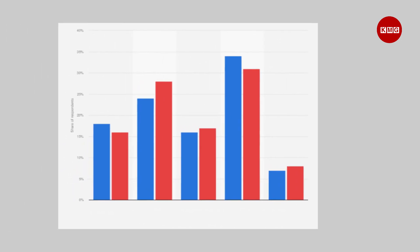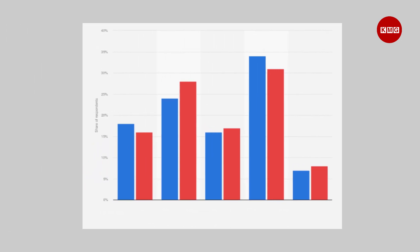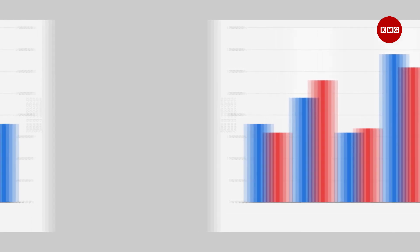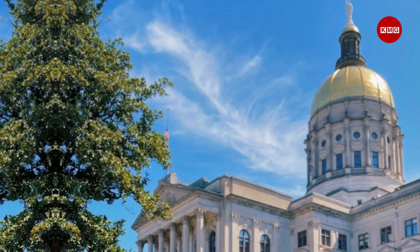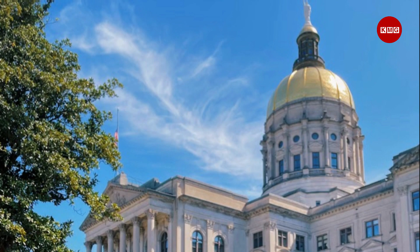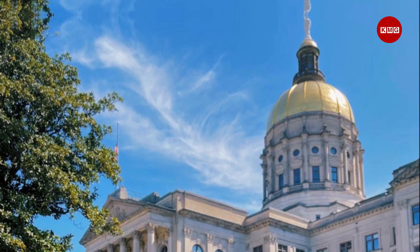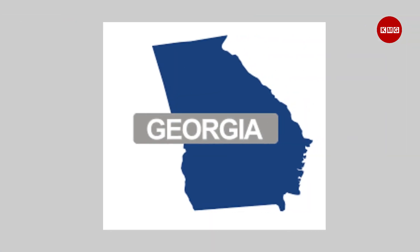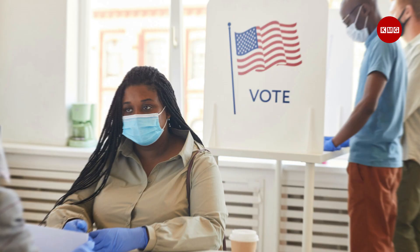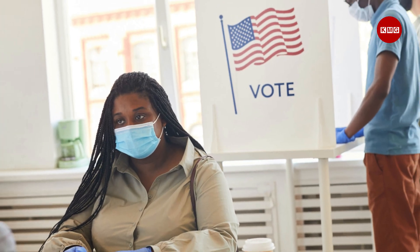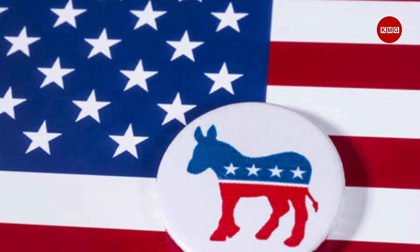and they can change over time depending on the political and social trends in each state. For example, Georgia, which was once a solidly red state, has recently become more competitive and even flipped to blue in the 2020 presidential election, thanks to the mobilization of the African American vote and the suburban vote, which tend